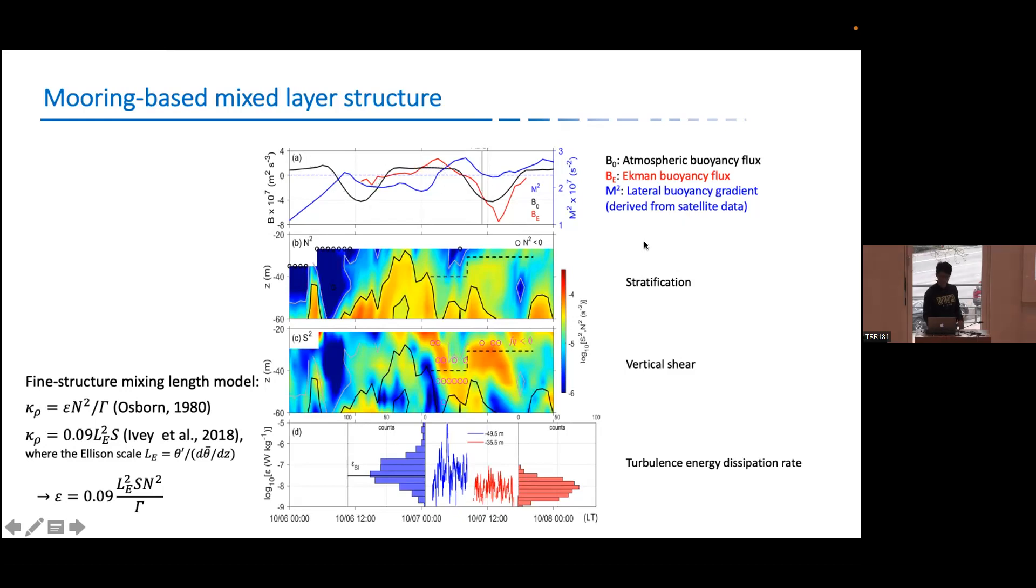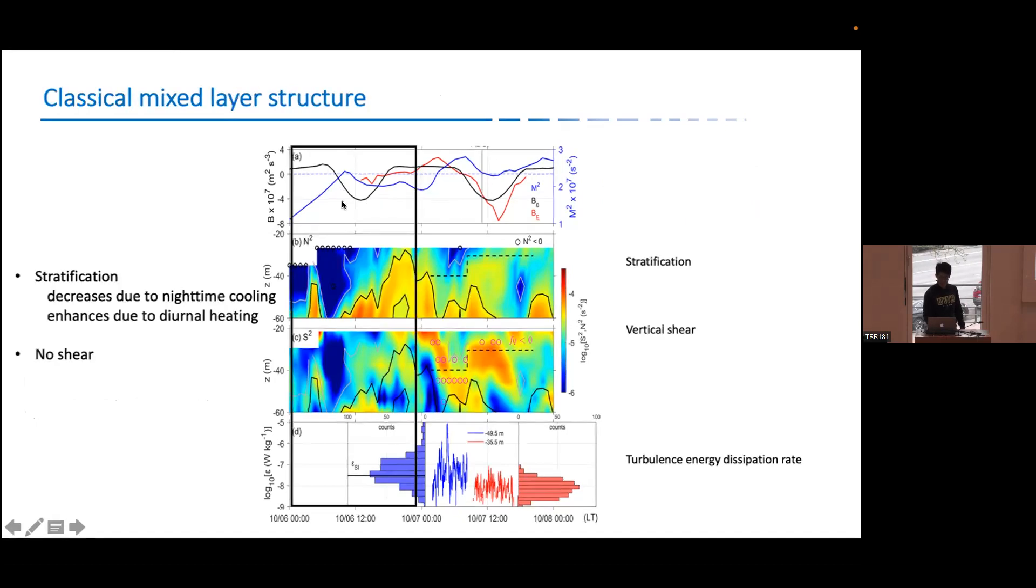And one thing I also need to mention that, as you can see, this mooring is covering two complete diurnal cycles, as you can see from this B₀ here. This is one daytime, nighttime, daytime again. And basically what you see is when you have a little bit indication of a front, you can see from this M², the blue line. The mixed layer structure shows you nothing very interesting. It's just a classical view of oceanic surface mixed layer. What I mean is the stratification decreases during nighttime. And during daytime you have N² enhanced. This is normal. And there's no shear. What we expect is that in the frontal region we have shear because of frontal jets. So I would say this is in the beginning of the frontal genesis phase.